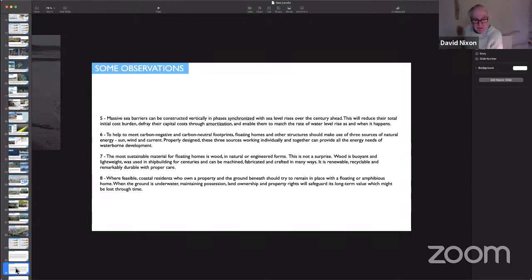Item seven: the most sustainable material for floating homes is wood in natural or engineered forms. Back to wood. Buoyant, lightweight, used in shipbuilding for centuries. You can machine it, fabricate it, craft it in all sorts of different ways. It's renewable, recyclable and remarkably durable with proper care. Much better than steel, much better than aluminum, much better than fiberglass, all of which are in their own separate ways either an environmental and waste problem, a major generator of global warming gases, or have very poor resistance to water, sea water corrosion.